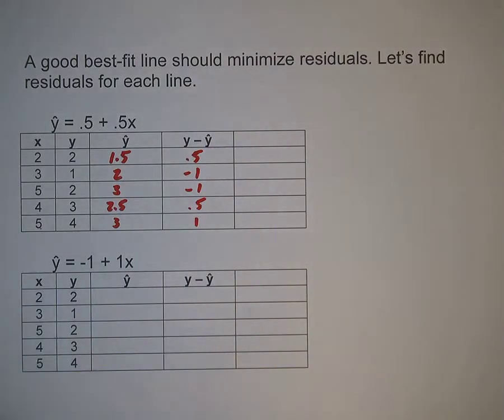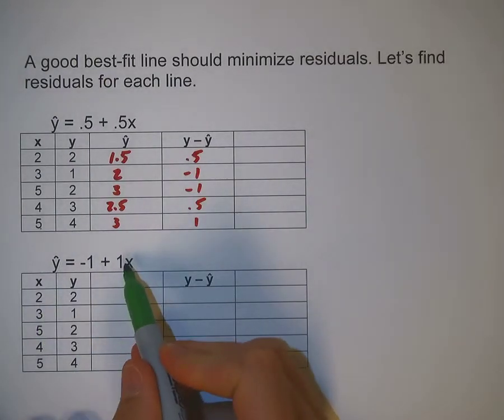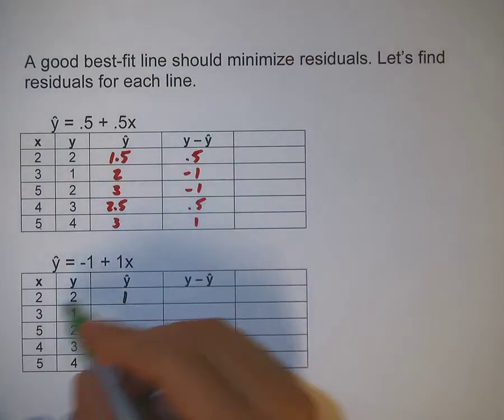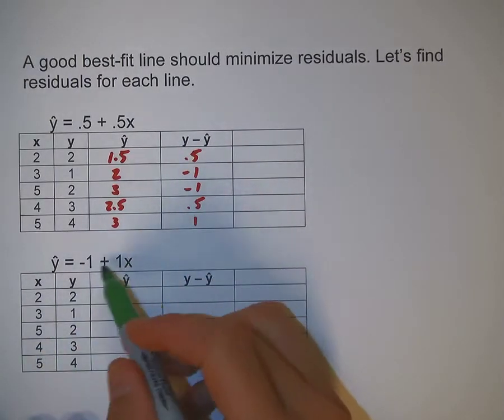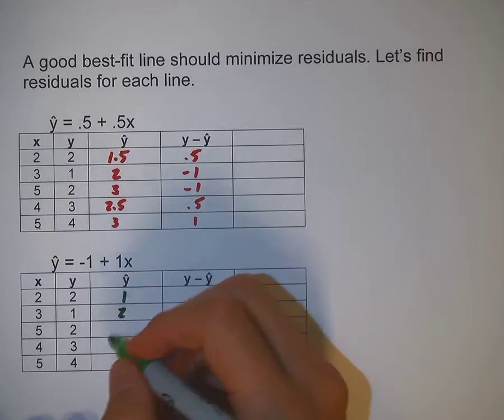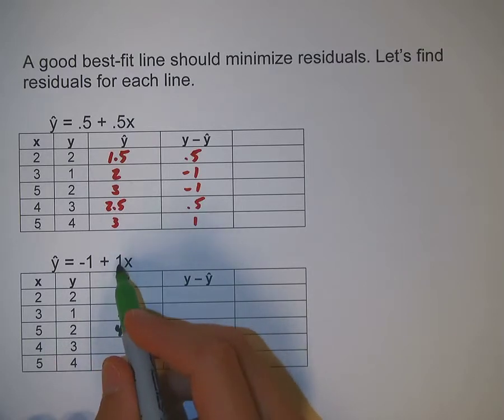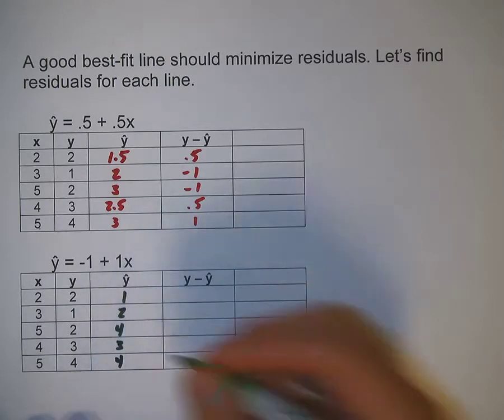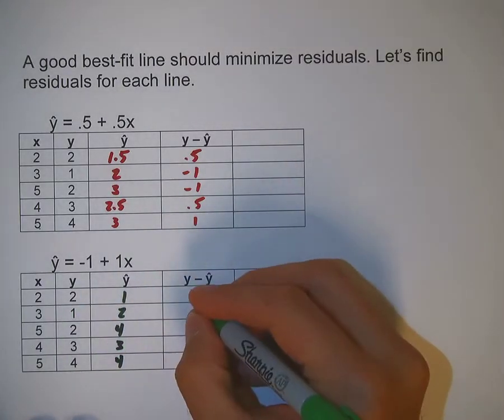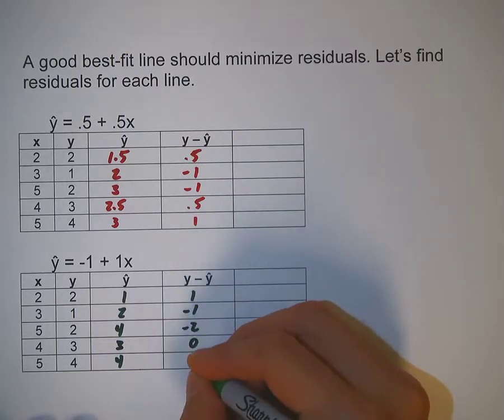Let's do the same thing for my second equation. Plug 2 in for x. So 1 times 2 is 2, plus negative 1 is 1. 3 plus negative 1 is 2. 5 plus negative 1 is 4. 4 times 1 is 4, plus negative 1 is 3. And 5 is also 4. Now y minus y-hat: positive 1, negative 1, negative 2, 0, and 0.